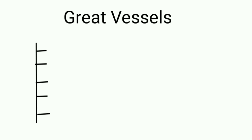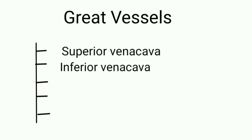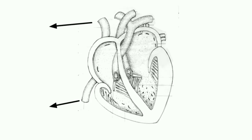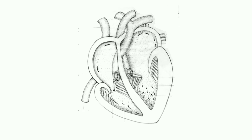Great vessels: the great vessels are the major vessels which directly carry blood into or out of the heart. Five great vessels enter and leave the heart: the superior vena cava, inferior vena cava, pulmonary artery, pulmonary vein, and the aorta. The superior and inferior vena cava are collectively called the vena cava. These vena cava return deoxygenated blood from circulation in the body and empty it into the right atrium. The vena cava are not separated from the right atrium by valves.